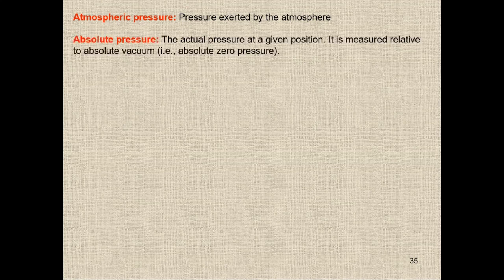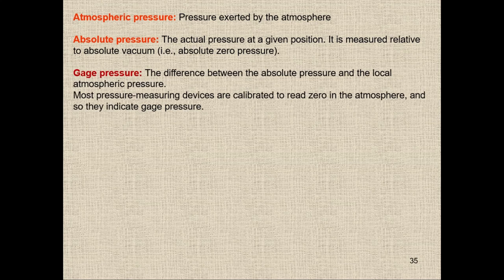The second type is absolute pressure — the actual pressure at a given position, measured relative to absolute vacuum or absolute zero pressure. The third type is gauge pressure: if the pressure is above the atmospheric pressure, the extra pressure is called gauge pressure. The absolute pressure equals atmospheric pressure plus gauge pressure.